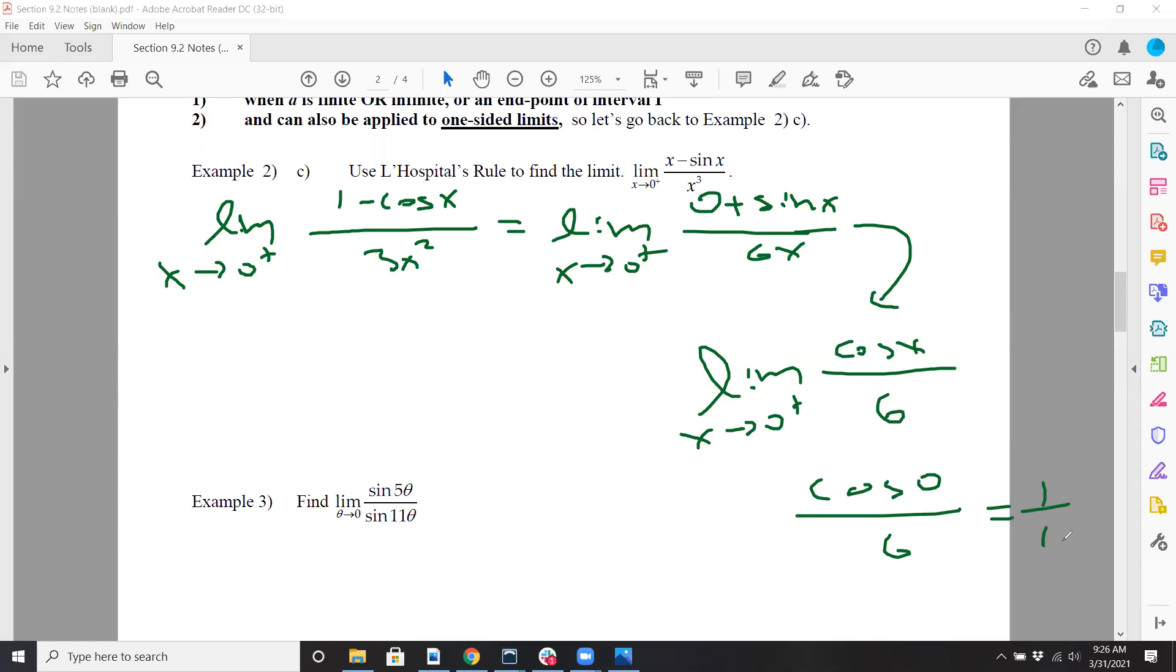You still have a problem. So you still got to do it one more time. Don't get lazy. You got to write that limit notation with equals or arrows, because those are true statements. The derivative of sine is cosine x, and that's 6. Now plug in zero. And you get 1/6.